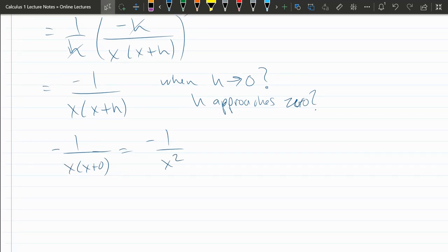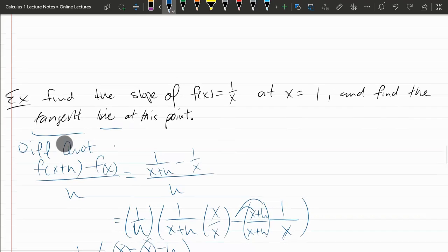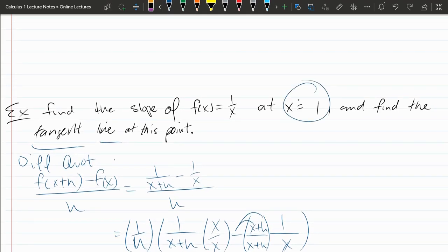Now we get to plug in. X naught was one, somewhere up here. Let's check this out again. Here's our x value. Before I labeled it as x naught, y naught. So x naught is one. Y naught is f of x naught.